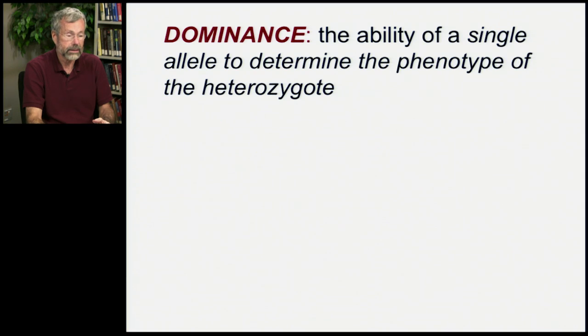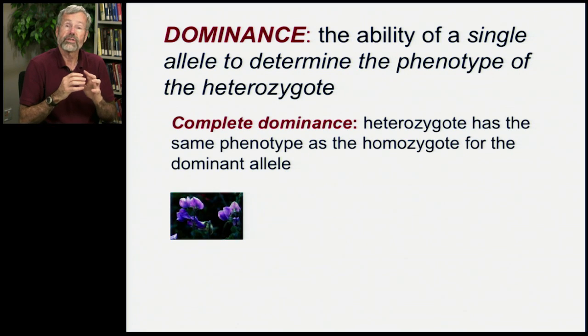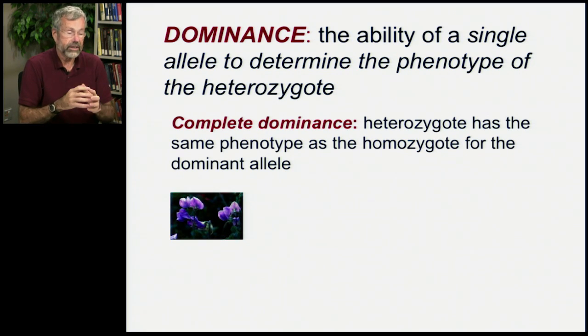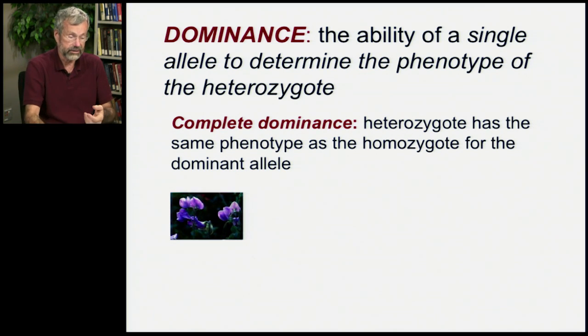Now let's turn to an underlying phenomenon that explains part of the patterns of Mendelian genetics, and that's called dominance. Dominance is the ability of a single allele to determine the phenotype of the heterozygote. If there's complete dominance, the heterozygote looks the same — it has the same phenotype as the homozygote for the dominant allele.